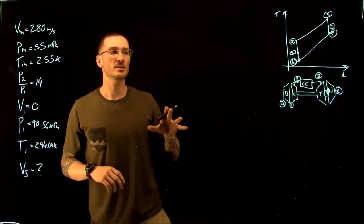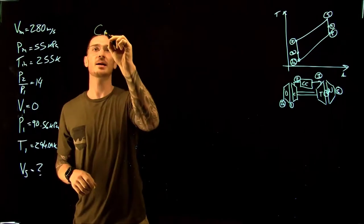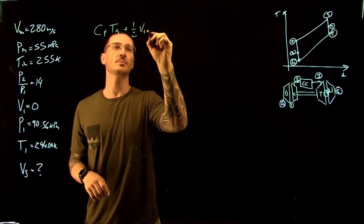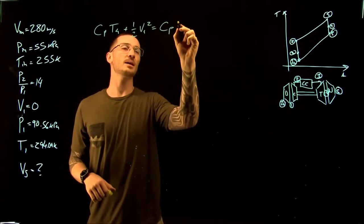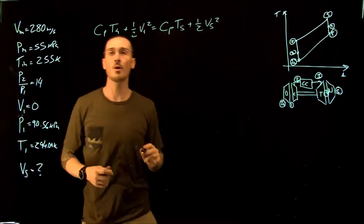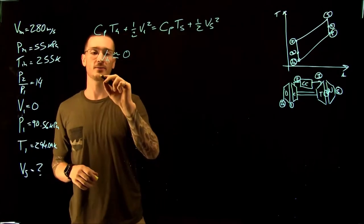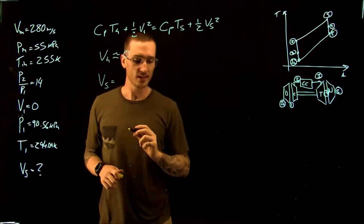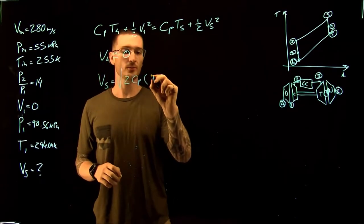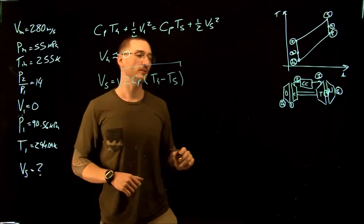Similarly, we assume an isentropic nozzle with no energy loss. Applying the energy equation across the nozzle: Cp·T4 + ½V4² = Cp·T5 + ½V5². Setting V4 ≈ 0 and solving for the exit velocity: V5 = √(2·Cp·(T4 − T5)). However, we don't yet have T4 or T5, so we need to solve for those temperatures.